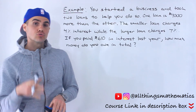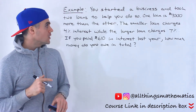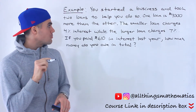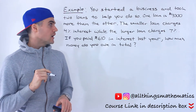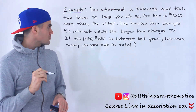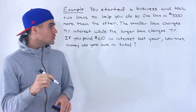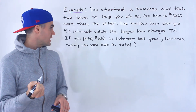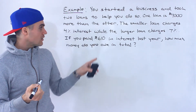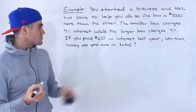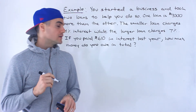So you started a business and took two loans to help you do so. One loan is $4,000 more than the other. The smaller loan charges 4% interest, while the larger loan charges 7% interest. If you paid $610 in interest last year, how much money do you owe in total?